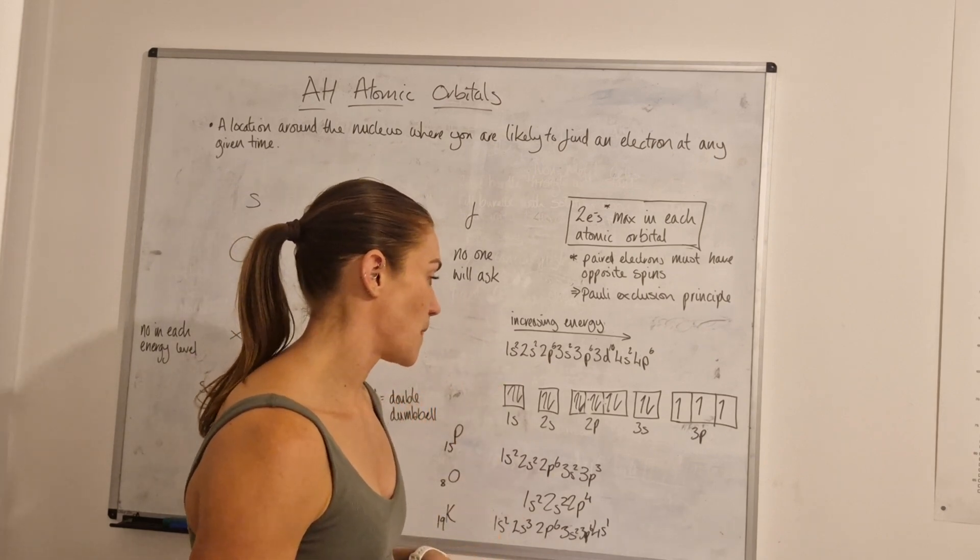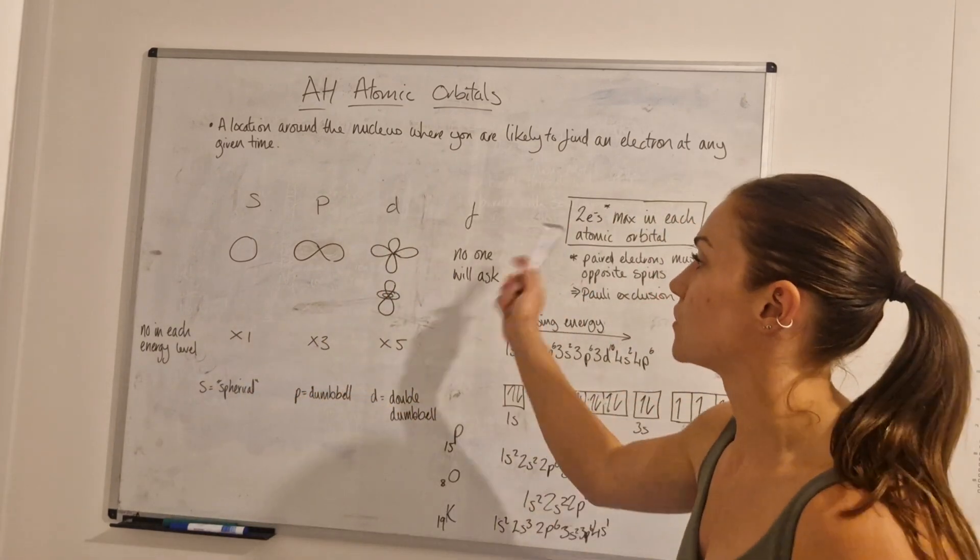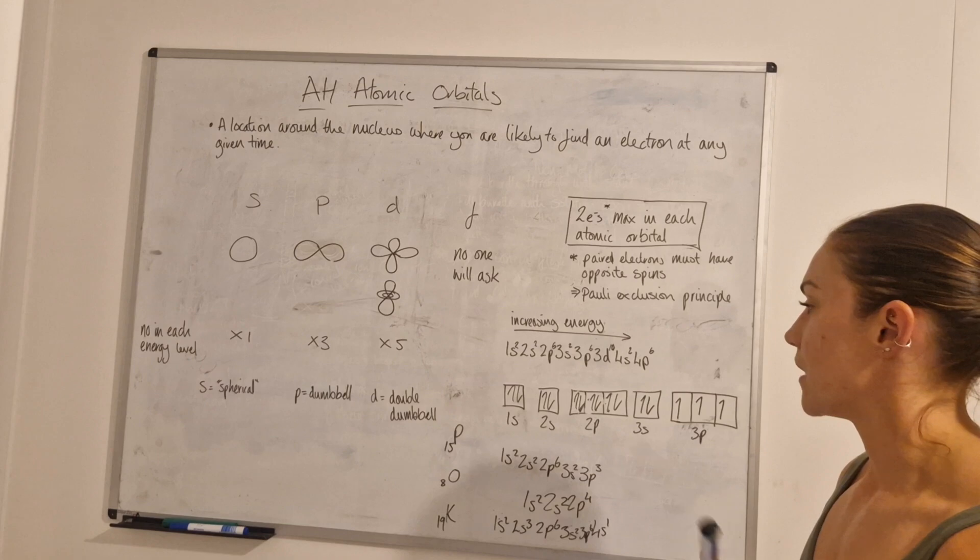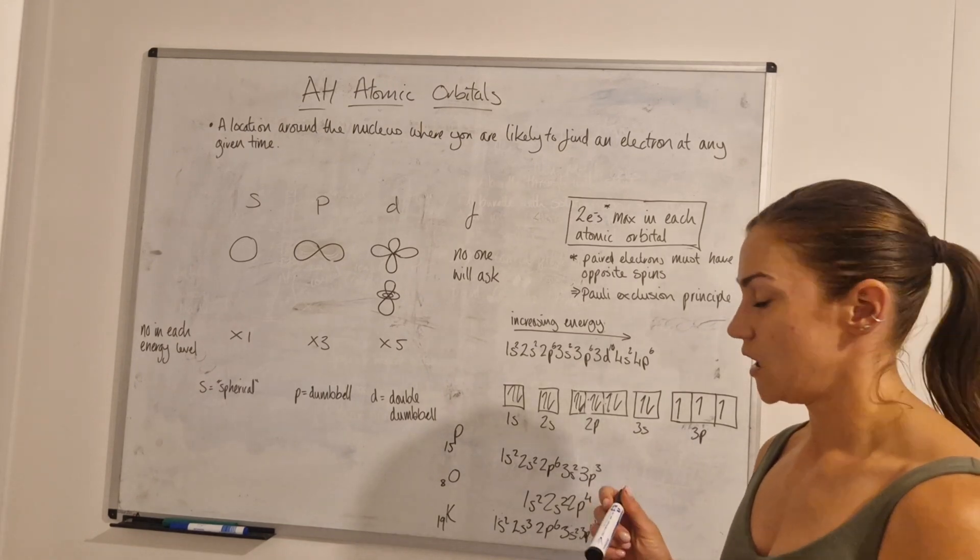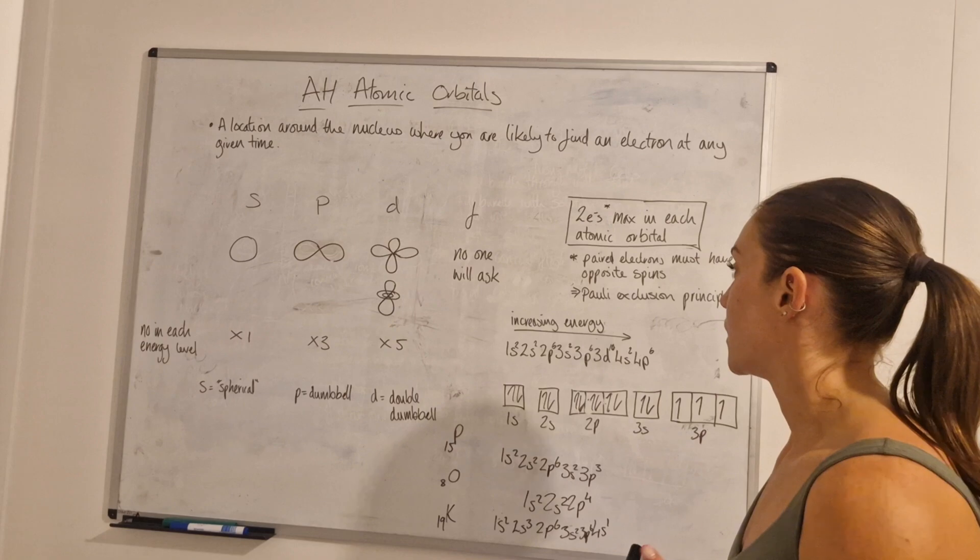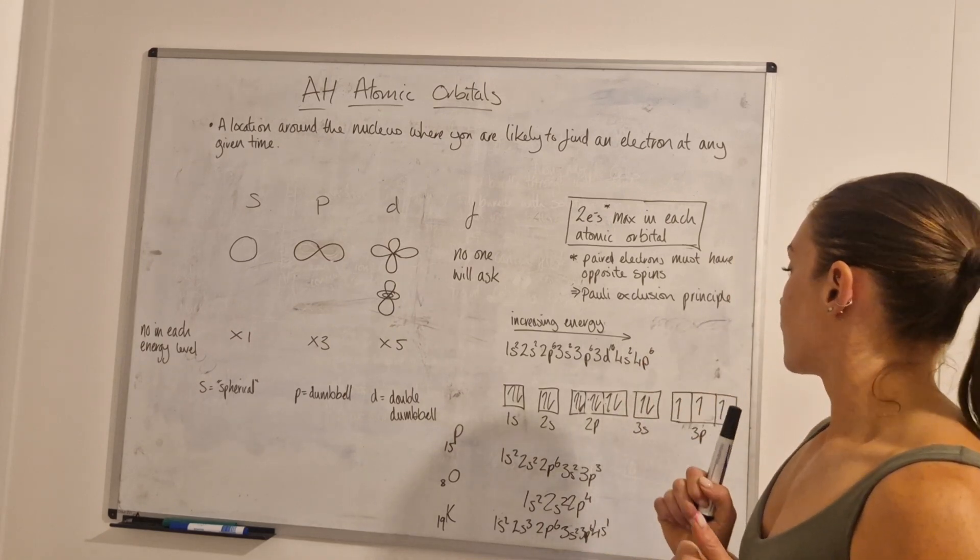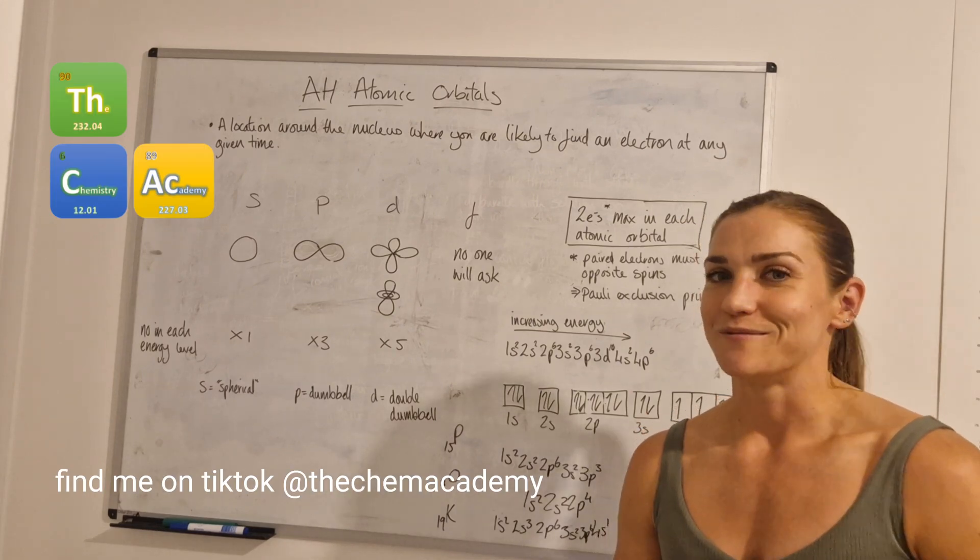Hopefully that helps you for now with the shapes of the orbitals, how many electrons can go in each, and a little bit about some of the rules that apply when you're doing electron configurations: the Aufbau principle, Hund's rule, and the Pauli exclusion principle. If you find this helpful please give it a like, don't forget to subscribe, and I'll see you soon.